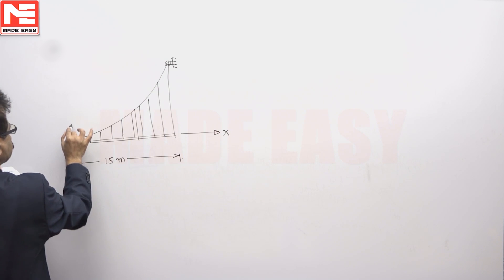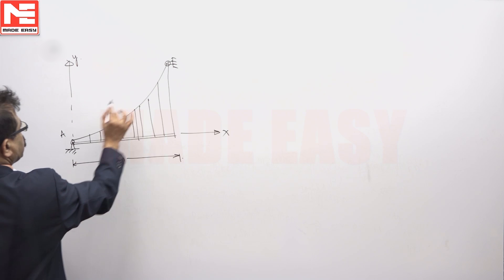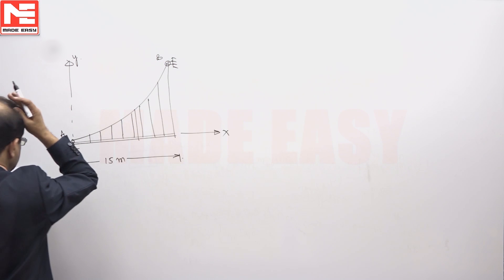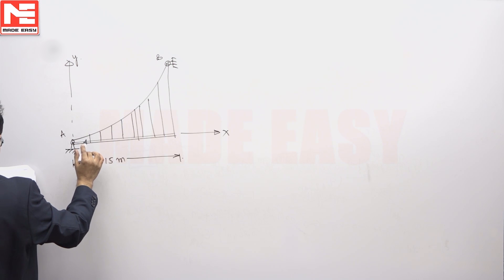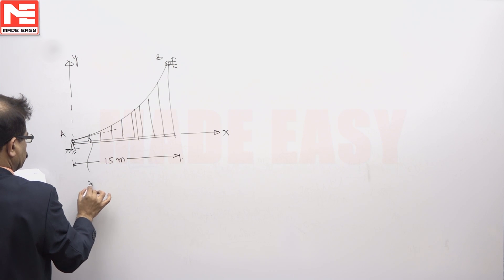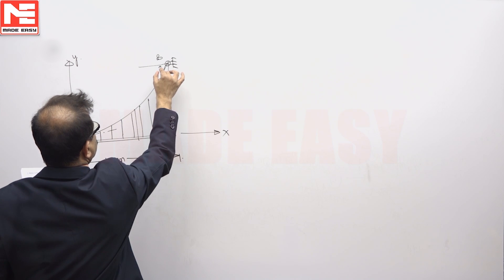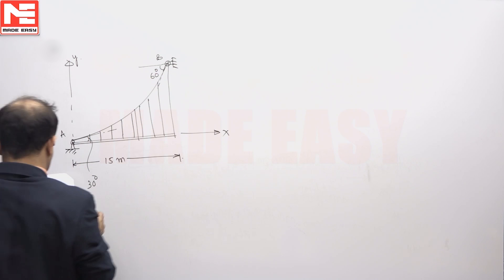You can take this as x axis, this is y axis, this point is A B. Initially, there is some slope 30 degrees. You drop a tangent 30 degrees, this angle is 60 degrees.